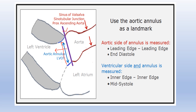The LVOT diameter is measured from inner edge to inner edge. Everything from the valve towards the aorta is measured from the leading edge to the leading edge. So to summarize: everything towards the ventricular side is measured from inner edge to inner edge in systole, while anything away from the valve towards the aorta is measured from leading edge to leading edge in diastole.